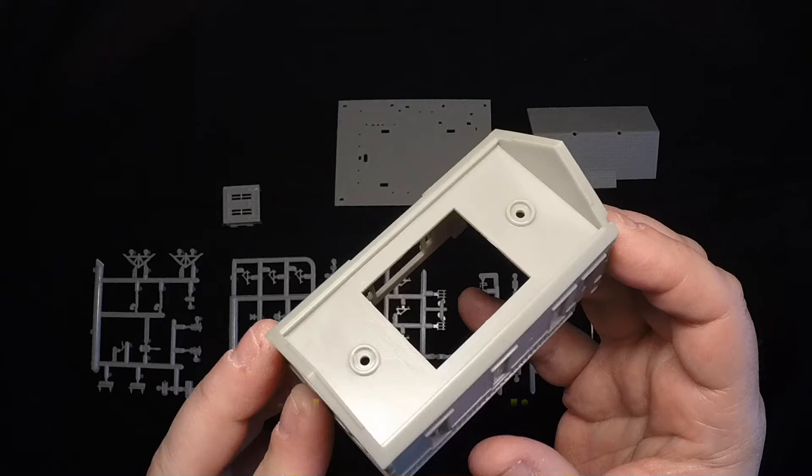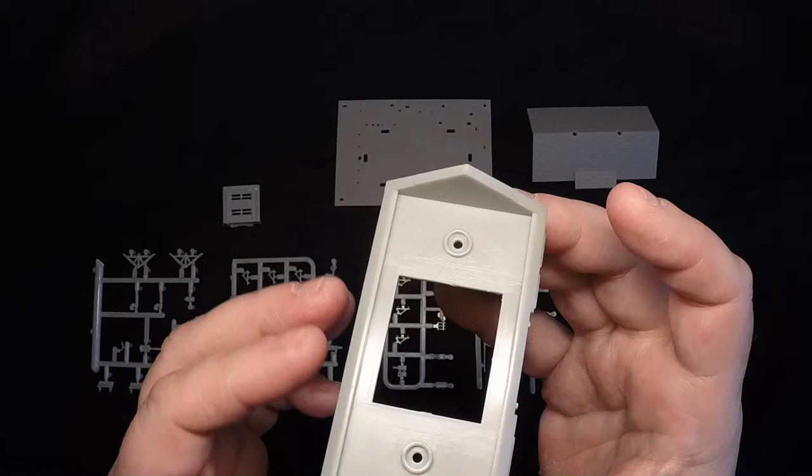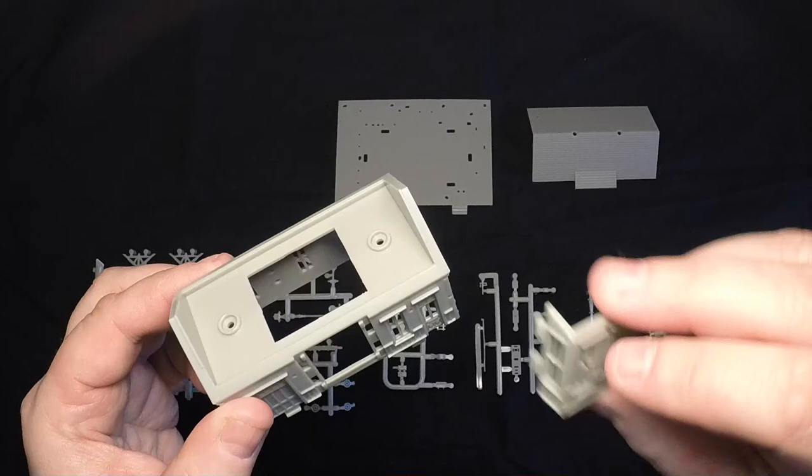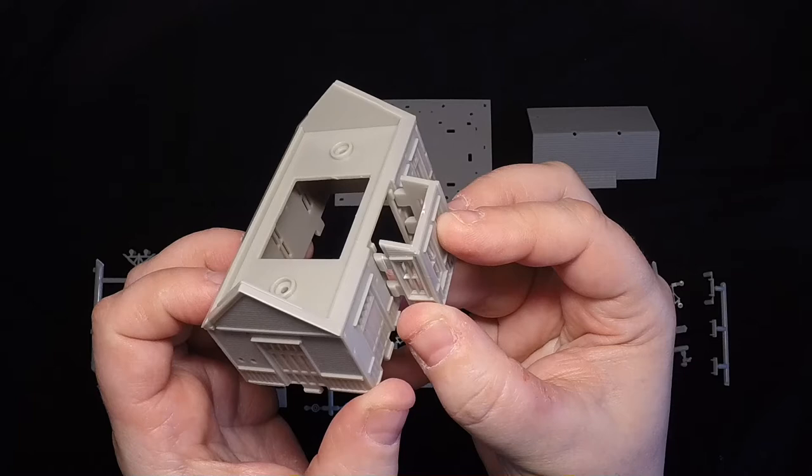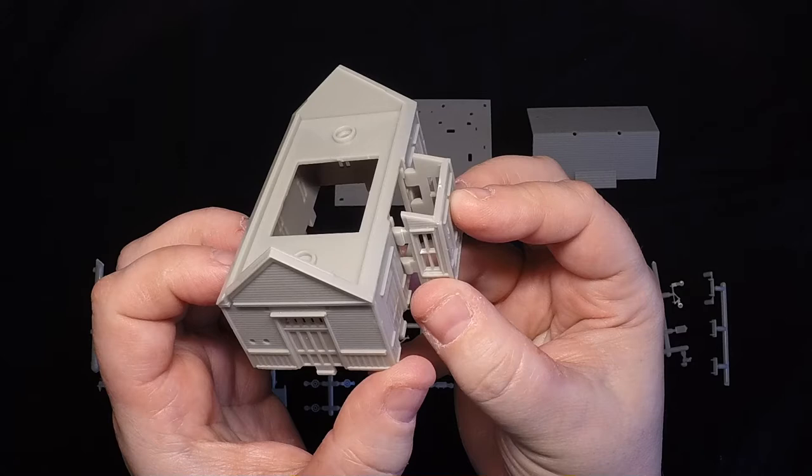Usually, N-scale kits have all of the walls as flat pieces that have to be assembled. This just has the main building, and then it has this separate bay window, which will go on the front. Everything is located with tabs. If you press this in now, it'll actually be permanently joined. I don't want to do that yet because it's going to be easier to paint these separately.